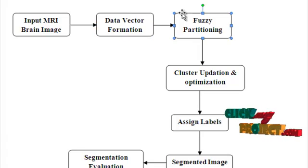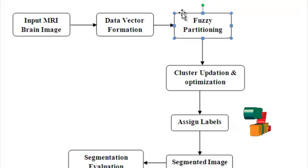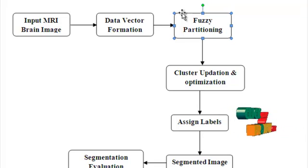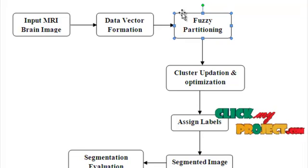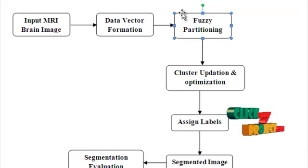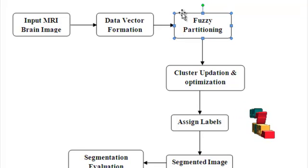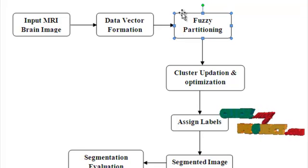The third block is fuzzy partitioning. Clustering can be thought of as a form of data compression where a large number of samples are converted into a small number of representative clusters. We specify the number of clusters, then initialize the membership values randomly. Afterwards, we compute the centroids for each cluster, then compute the new membership values.